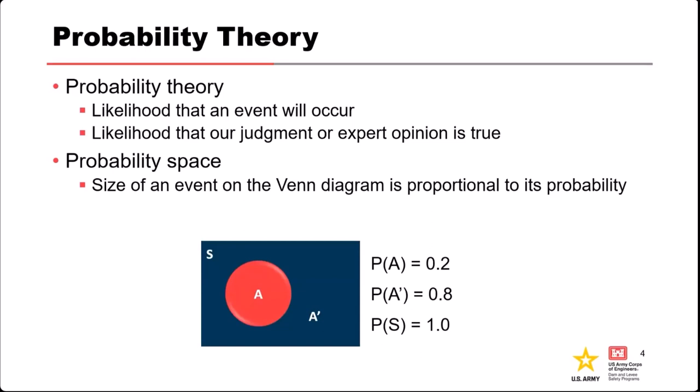We touched on Venn diagrams yesterday, so just to refresh: Venn diagrams can be used to portray events and their probabilities by scaling the size of the diagrams so that things are sized proportional to their probabilities. We usually call that a probability space. In this simple example, the probability of event A is 0.2, the complement probability of not-A is 0.8, and the total probability covering the whole sample space always has to be 1.